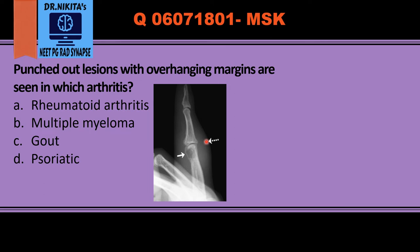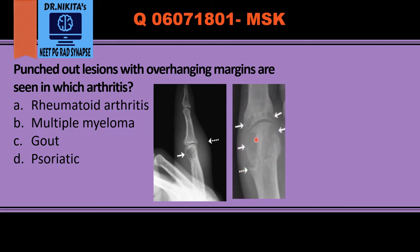Again here we see punched out erosions — punched out lytic lesions. We see that the joint space is preserved. So in gout the joint space is preserved. There is no osteopenia; the bone density is maintained.